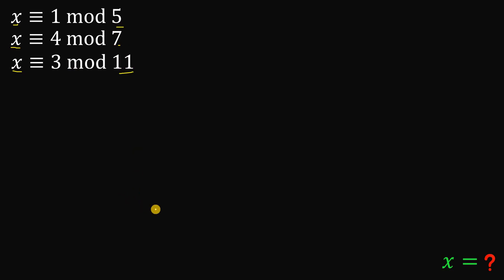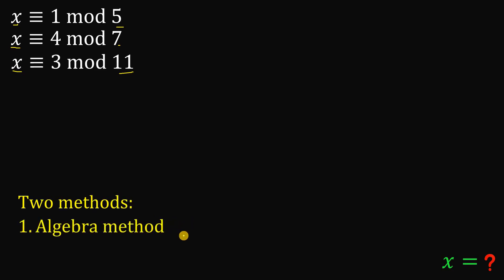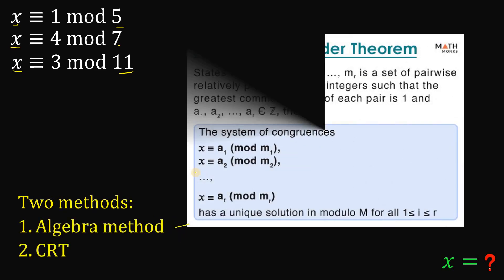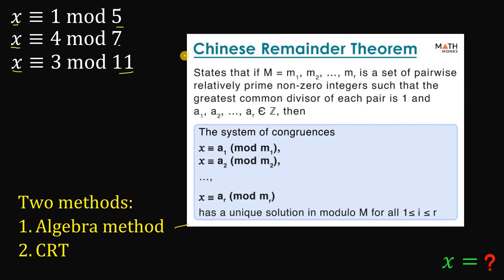I will show you two different methods to answer this. The first one is the algebra approach, and the second one is the Chinese Remainder Theorem. In order to use the Chinese Remainder Theorem, we need to make sure that those moduli are relatively prime to each other — 5 is relatively prime to 7 and relatively prime to 11. So we can use the Chinese Remainder Theorem.